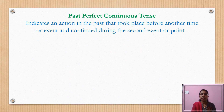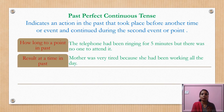Now the last tense — past perfect continuous tense. It indicates an action in the past that took place before another time or event and continued during that second event or point. Up to the point we are talking about, the action started before and was in continuation up to that point. For example, 'The telephone had been ringing for five minutes but there was no one to attend it.'